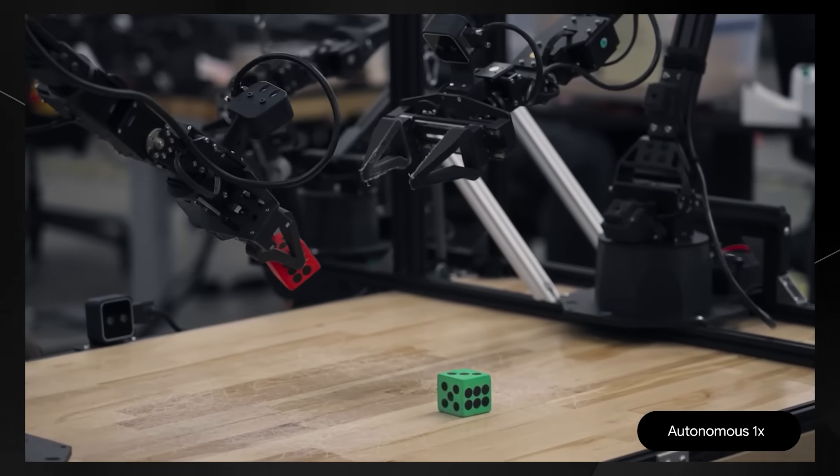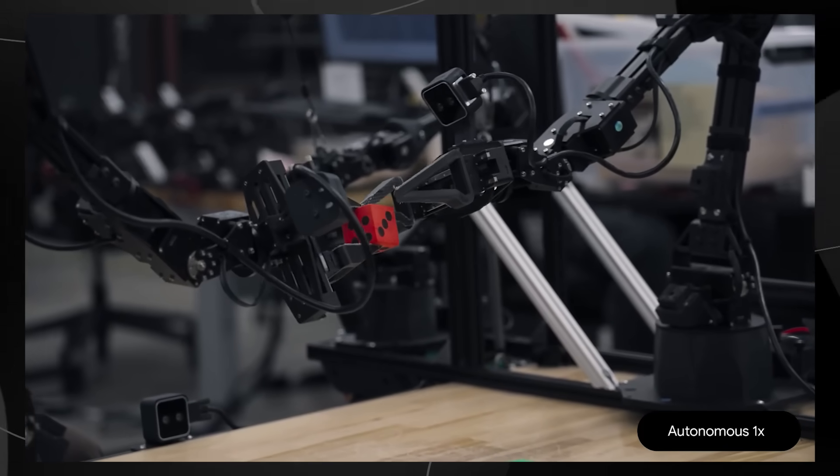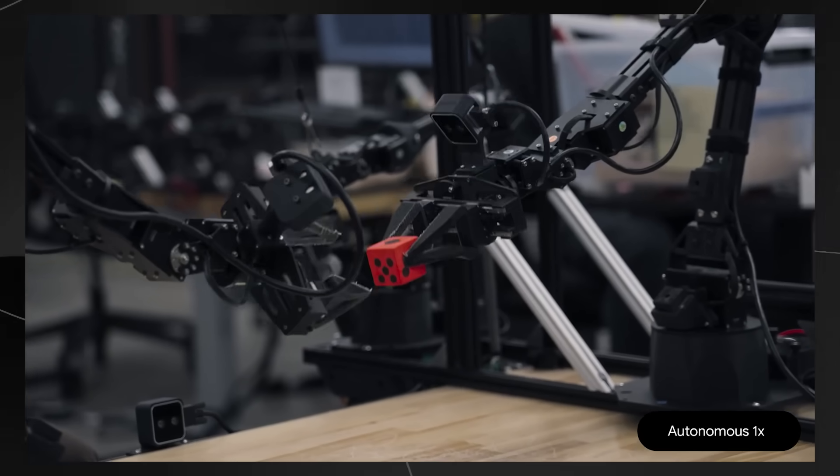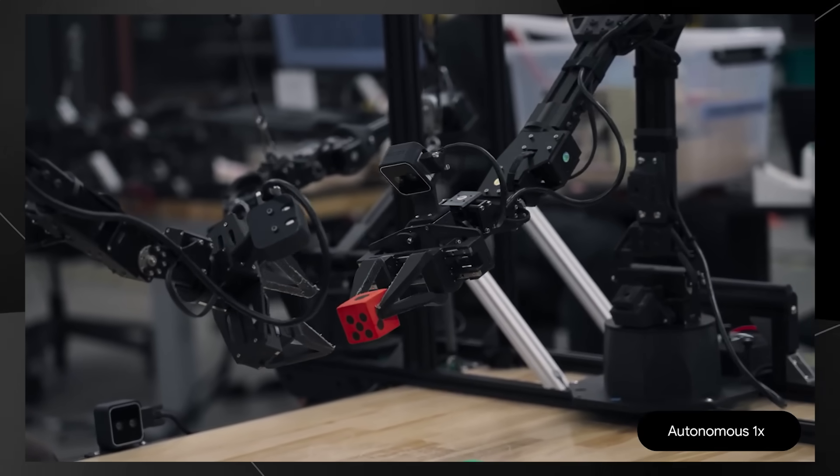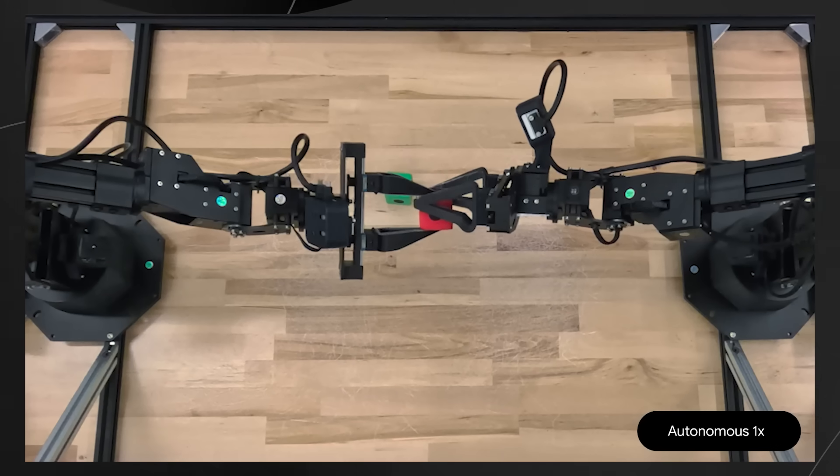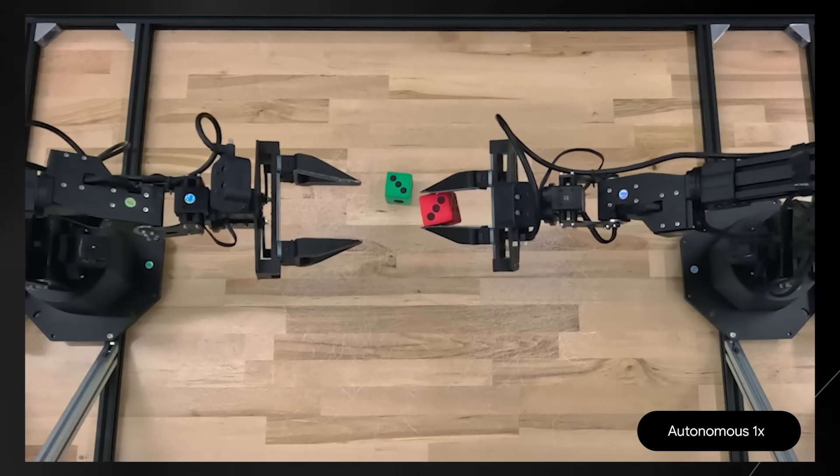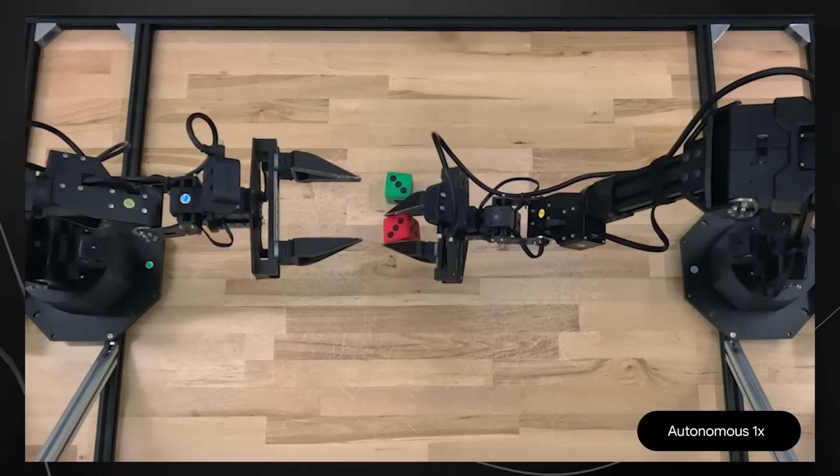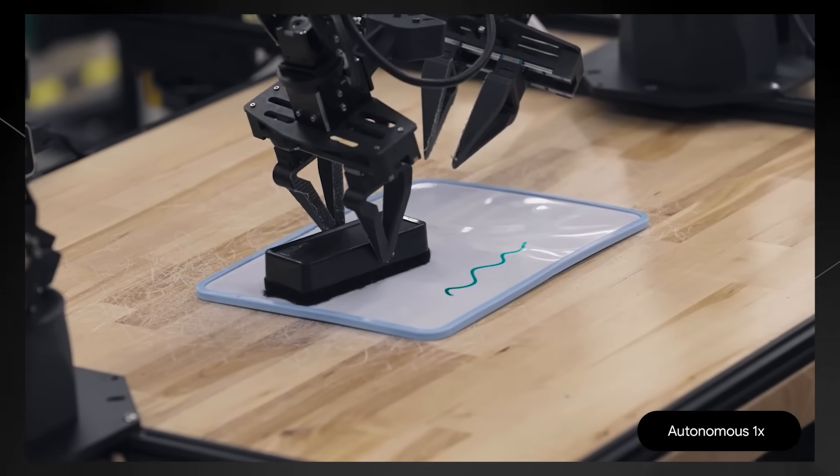Many robots can execute predefined actions, but these movements are not predefined. The robot is reasoning both about what it sees and how to move. It figures out how to make the red die match just like we asked. And this generalization goes even further.